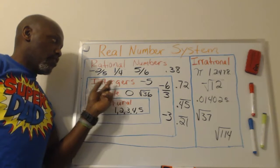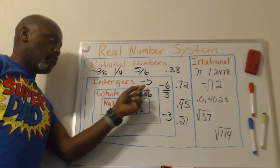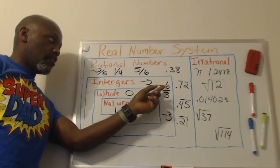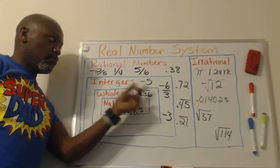Then you have integers. Integers are your negative numbers, your negative whole numbers, like negative 5 and negative 6 over 3. Negative 6 over 3 is 2, so negative 2 is an integer.